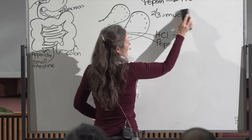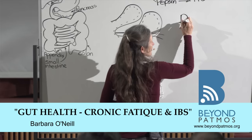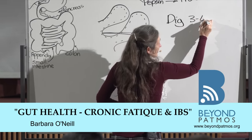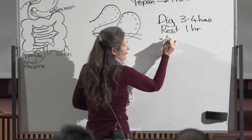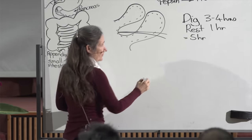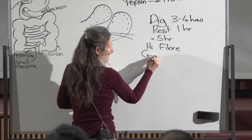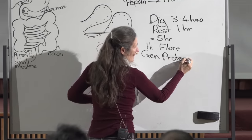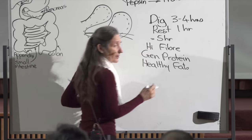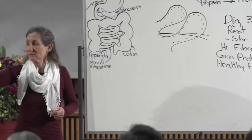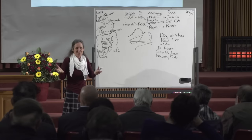Another thing that can exhaust hydrochloric acid is constant eating. Digestion takes approximately three to four hours, and then your stomach loves a one-hour rest — meaning we should leave about a five-hour break between meals. The only way to achieve this is to have a high-fibre diet, generous amounts of protein, and healthy fats — nuts, seeds, avocado, coconut, and the two extracted oils eaten for centuries: coconut oil and olive oil.